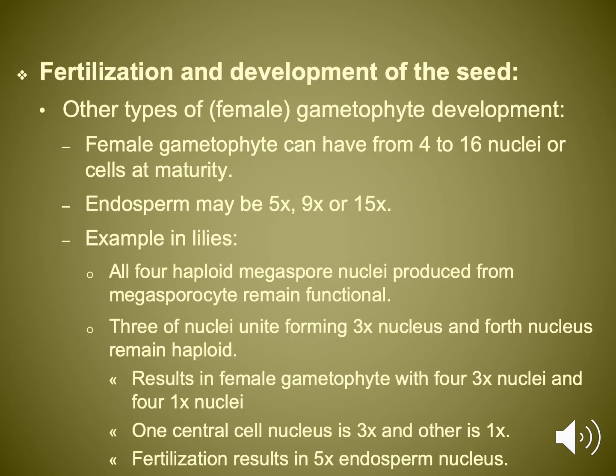The development of a seed depends on fertilization happening first. When we hear fertilization, we typically think about what happens in humans — a sperm uniting with an egg, each having a single set of chromosomes, with the fusion resulting in an organism that is diploid, or having a pair of chromosomes. This occurs in plants, but not always. A lot of times, the sperm or egg may actually have multiple sets of chromosomes, and as a result you may have what we refer to as a polyploid.